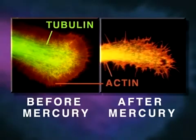Shown here is a neurite growth cone stained specifically for tubulin and actin, before and after mercury exposure. Note that the mercury has caused disintegration of tubulin microtubule structure.